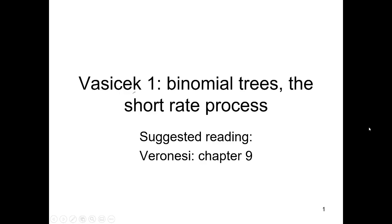In this chapter, we're going to do the Vasicek model. It's related to binomial trees and basically related to something we're going to call the short rate process. Vasicek at the end of the day is what's going to help us value derivatives. Suggested reading is Veronese. Veronese doesn't do the same type of trees, but some methodologies are similar to the ones presented here.